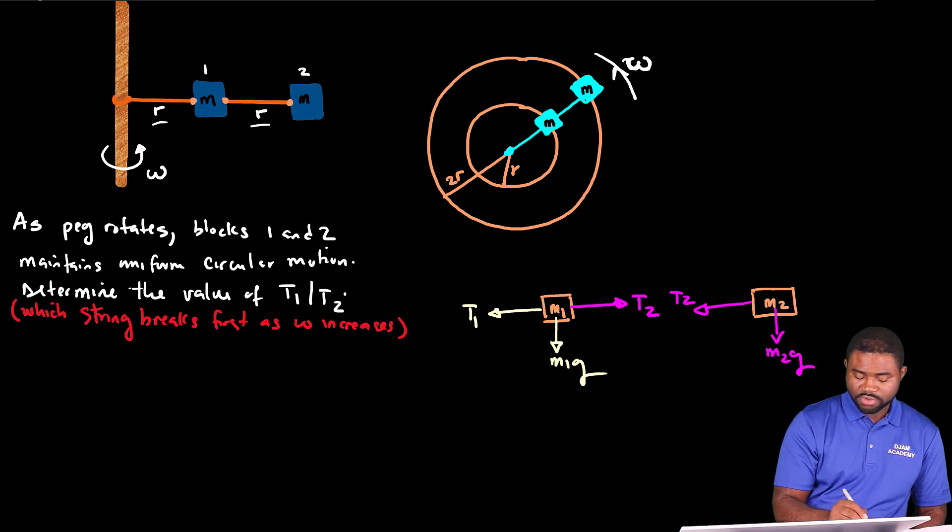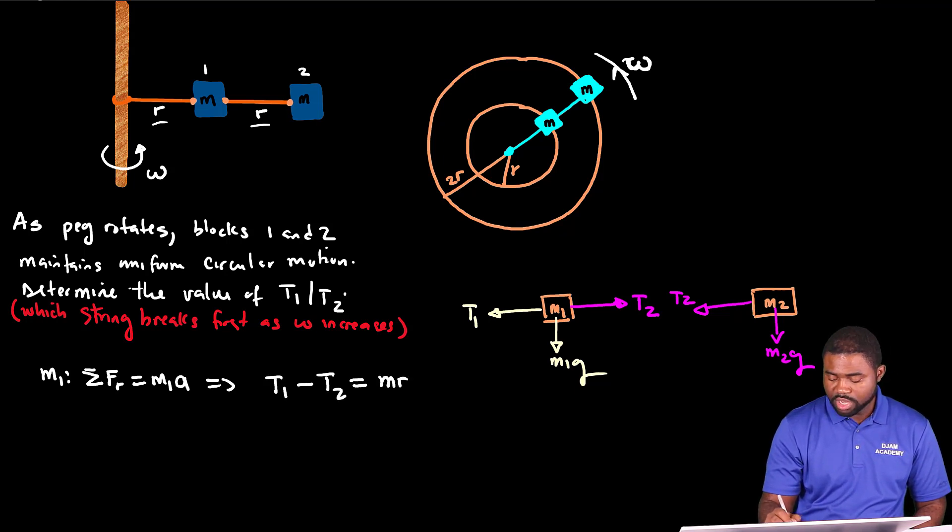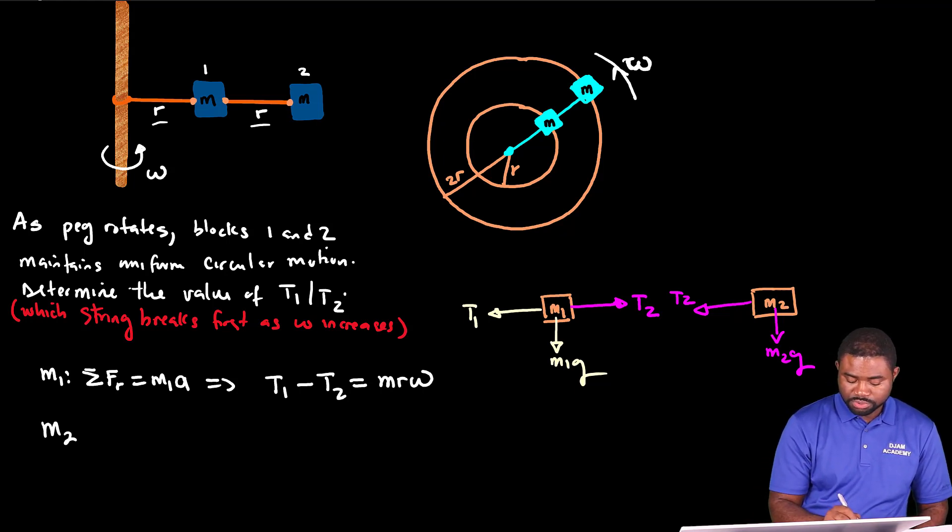If that is the case, for block one, we know that the sum of forces, this is equal to M1A, which implies that T1 minus T2 will be equal to MR omega squared.